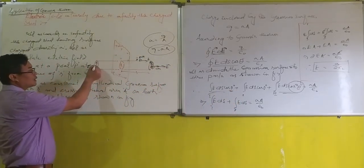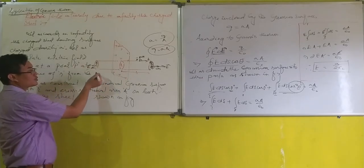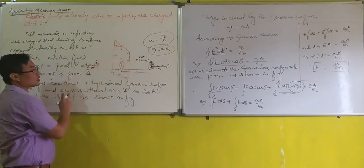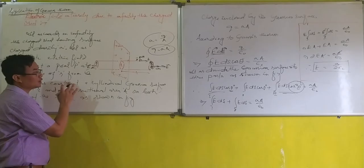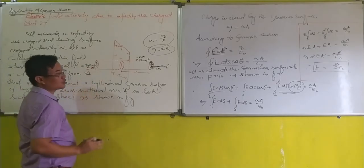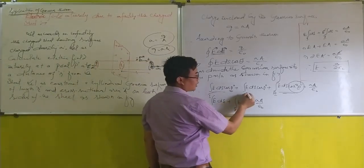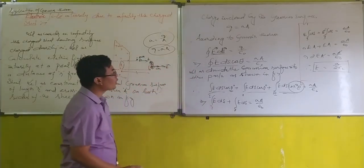For the second surface here, E vector goes away from the charge, and dA is also along the direction of electric field. Therefore, the angle between them is zero. For the second surface, I have written here.